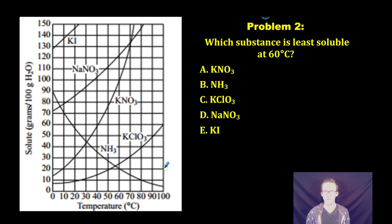As we look at problem number two, which substance is least soluble at 60 degrees Celsius? Pretty easy, I'm just going to head up the 60 degree Celsius line until I hit my first substance. In this case, it's ammonia. I can only dissolve approximately 20 grams of ammonia for every 100 grams of water. Everything else will be more soluble at that temperature.